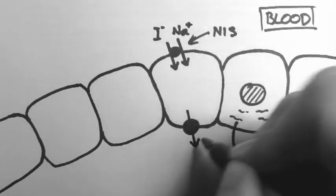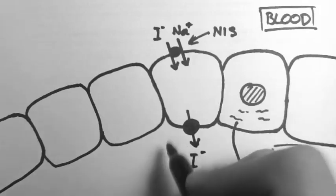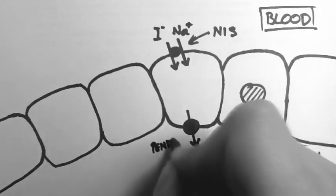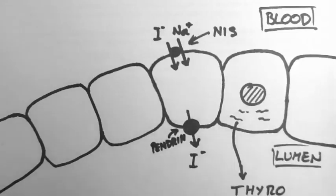And then the iodide is brought out of the follicular cells into the lumen by a transporter with a fantastic name known as Pendrin.